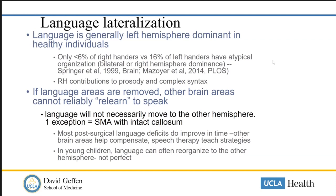Language lateralization is generally left hemisphere dominant in healthy individuals. Less than 6% of right-handers and 16% of left-handers have atypical organization. It's actually more common to be bilaterally represented in speech than to be right dominant alone. If critical language areas are removed, other areas of the brain can't relearn how to speak, making it imperative to protect these areas or risk permanent aphasia. Many post-surgical deficits can improve with time, and speech therapy can help, especially in younger patients.